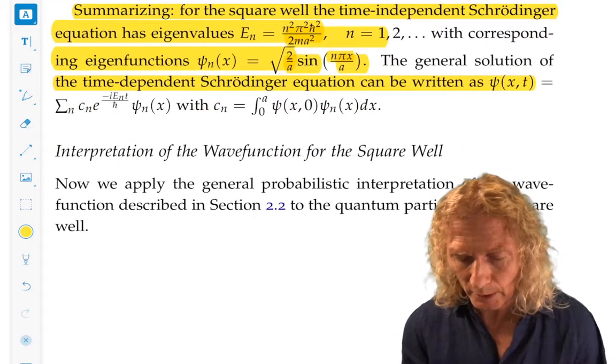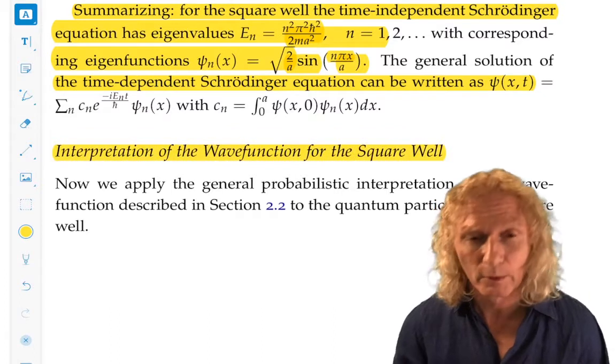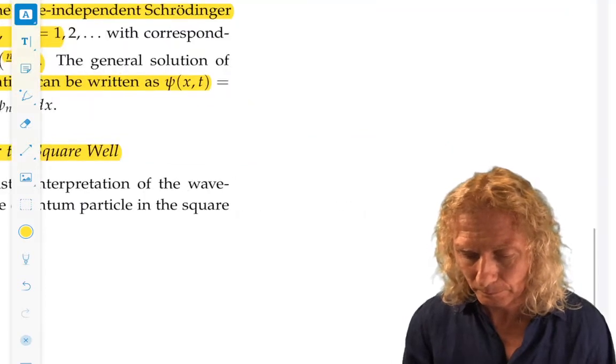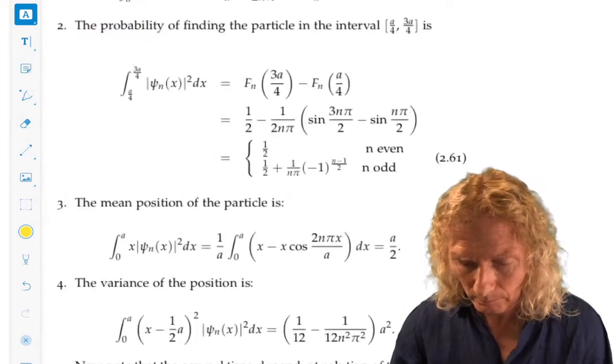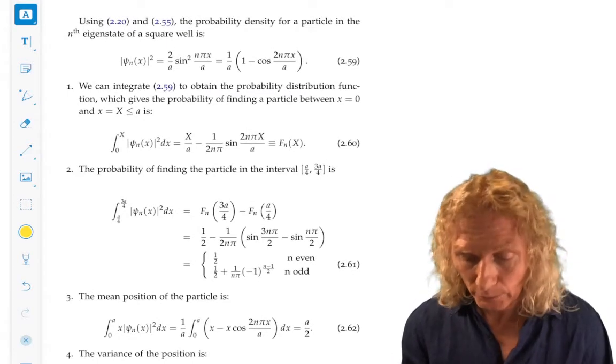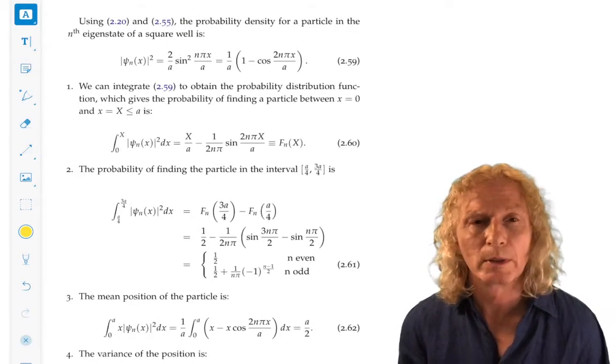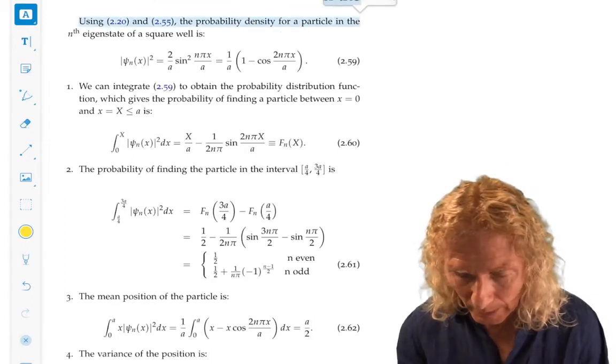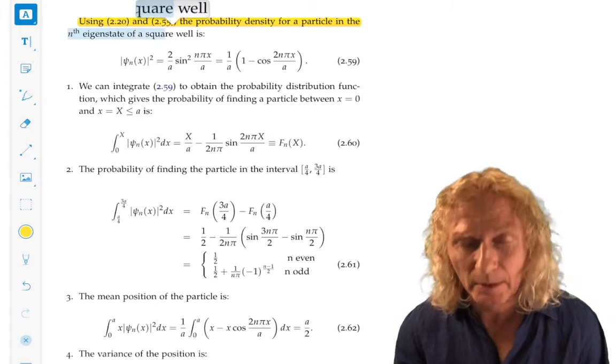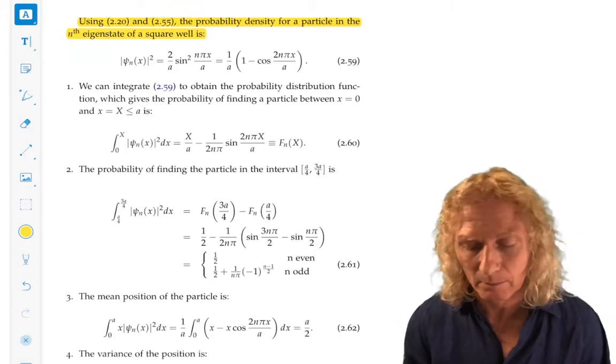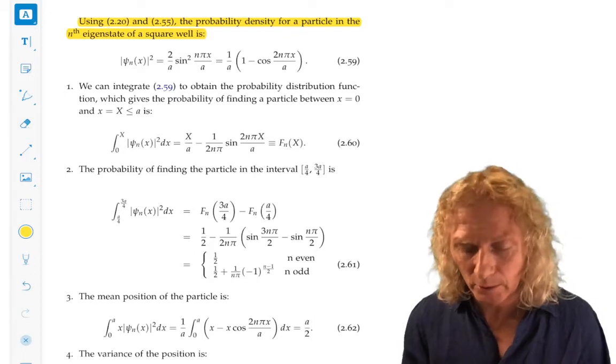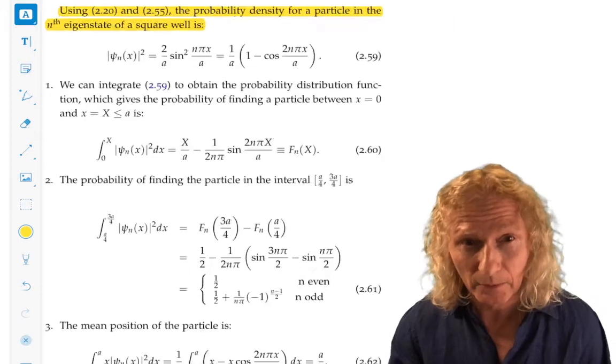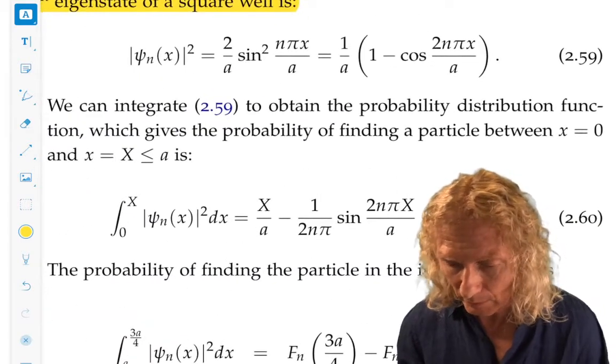We want to explore this a little bit further, but first let's look at interpretation of the wave function for the square well, in terms of the dynamics of a quantum particle moving in the square well. Well, the first thing we need to look at is the probability density. And let's simplify matters to begin with by looking at the probability density corresponding to the nth eigenstate.